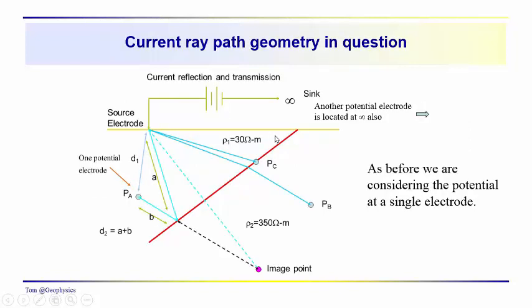So diagrammatically, what we're dealing with here is we've got two media. We've got a dipping interface. We've got our source electrode over here, but our sink electrode is off at a great distance. And also, our other potential electrode is off at a great distance. And we're just considering the potential at this particular electrode. You'll notice that the source electrode has current traveling down to the potential electrode directly along a direct path with length D1. And then we have a reflection path total length A plus B equal to D2. So this is the basic geometry.